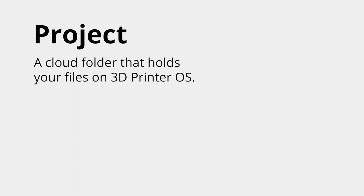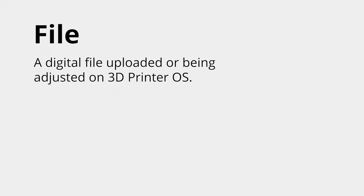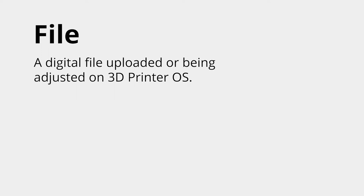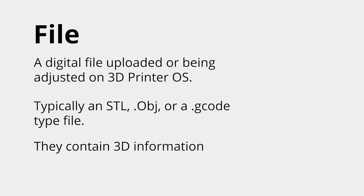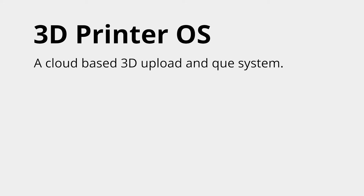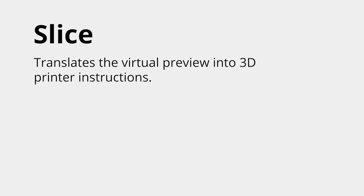Welcome to the world of 3D printing. We're happy to offer this service and we're just going to be charging the amount of material that you're going to be using. There are a couple of terms to know. A project is a cloud folder that holds your files on 3D Printer OS. A file is a digital file uploaded or being adjusted on 3D Printer OS — typically an .STL, .obj, or .gcode type file — and they contain three-dimensional information. A model is a virtual preview of your finished product. 3D Printer OS is a cloud-based 3D upload and queue system. And slice translates the virtual preview into 3D printer instructions.